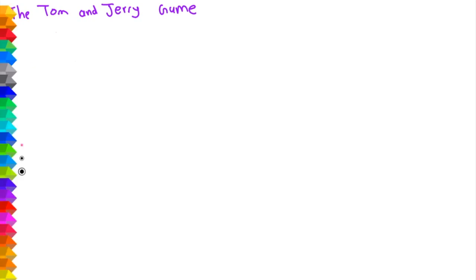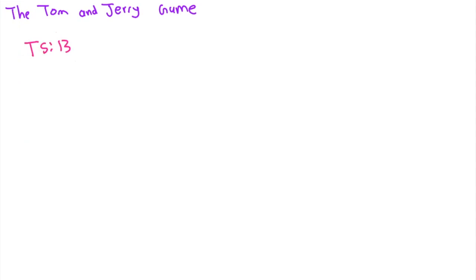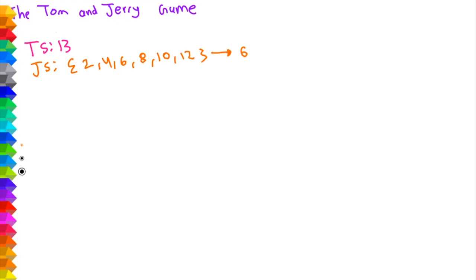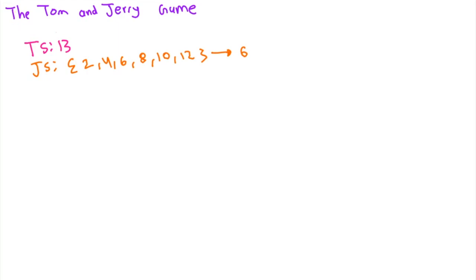Let's look at an example. Suppose TS is equal to 13. Then JS would consist of all the solutions 2, 4, 6, 8, 10, and 12. In this case, the number of solutions is 6, which is the number we're going to output. A very clever thing we can see is that this 6 is just TS divided by 2. TS divided by 2 becomes 6.5, which truncates down to 6.